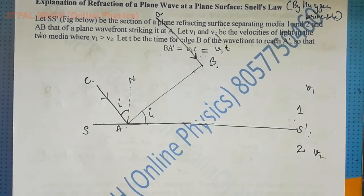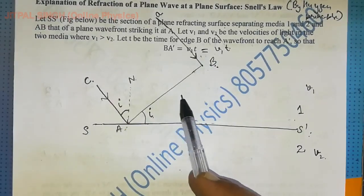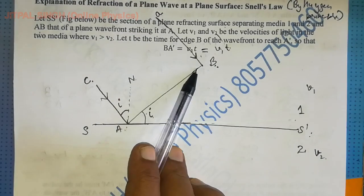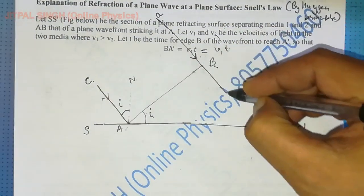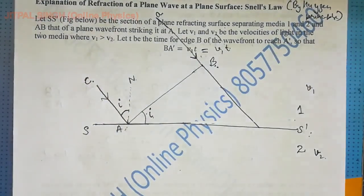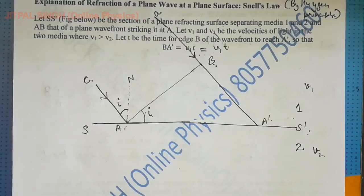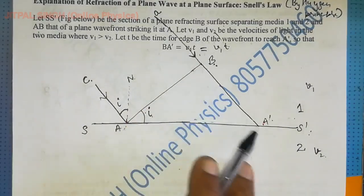Apart from A and B, I'll take one more point, say M, in between A and B — I'll add that later. Now, the time in which the disturbance from B reaches A' on SS' — how to get that A'? I'll make a straight line and suppose this is point A'.